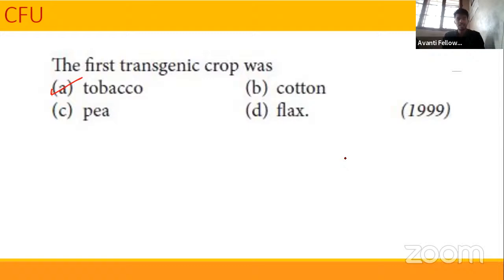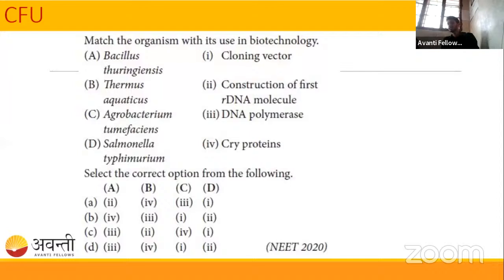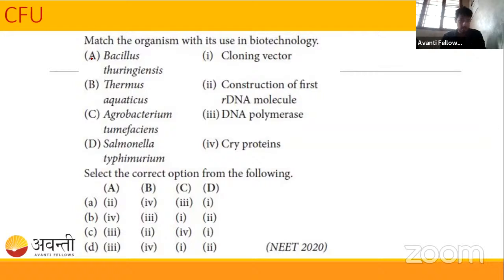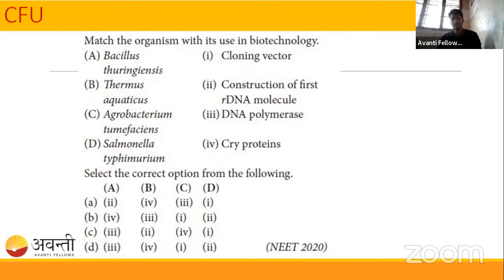Next question — match the organism with its use in biotechnology. The options are: Bacillus thuringiensis, Thermus aquaticus, Agrobacterium tumefaciens, Salmonella typhimurium. Match them with: cloning vector, construction of first recombinant DNA molecule, DNA polymerase, and scriber. This question was asked in NEET 2020. I'm giving you some time to answer.